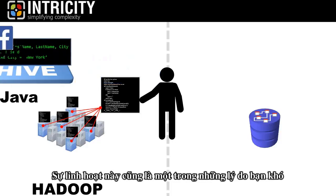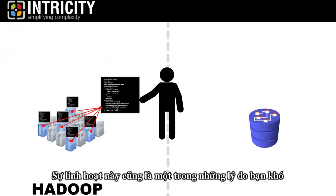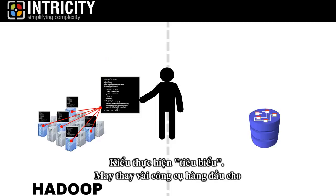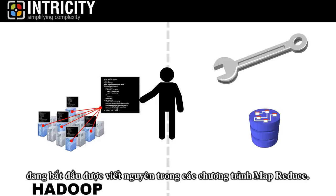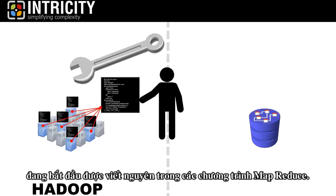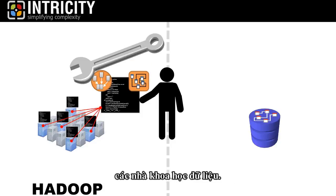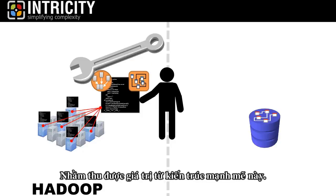This flexibility is also one of the reasons it's so hard to nail down a single practice or even a typical deployment type. The good news is that some of the leading tools for data management and analysis are now beginning to natively write MapReduce programs and prepackaged schemas on read, so organizations don't have to hire expensive data scientists to get value from this powerful architecture.